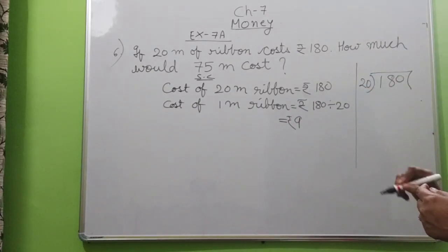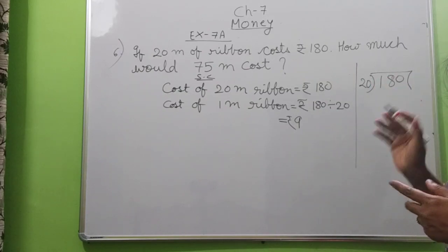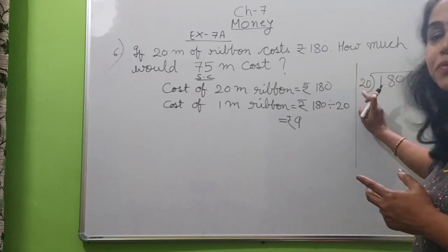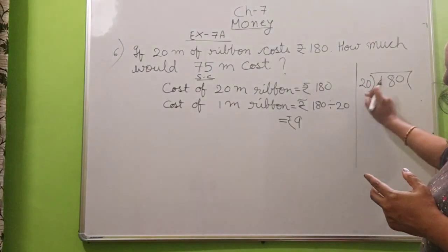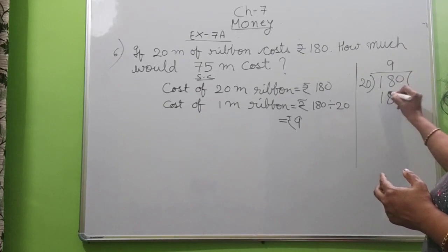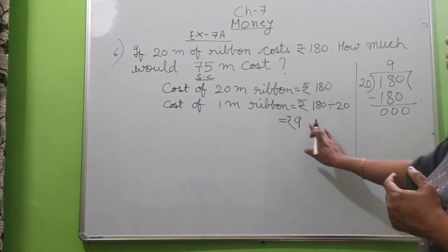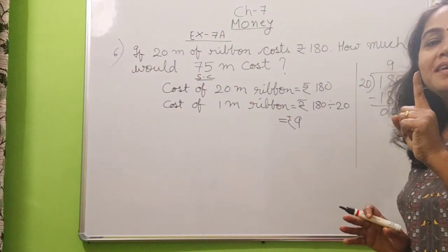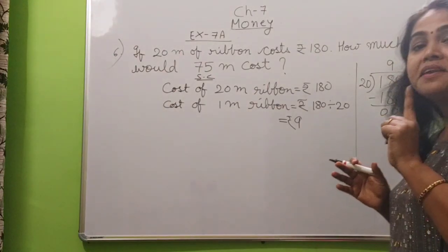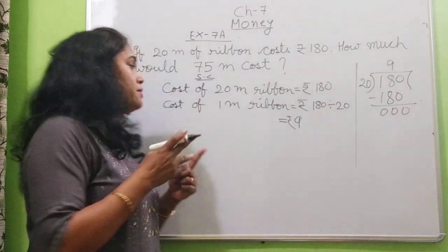For that, what do we do? We just tell table of 20 or you can say table of 2 also. 2 into 9 is 18. So 20 into 9 is 180. Now cost of 1 meter ribbon we have got. So we can find cost of any length of meter.